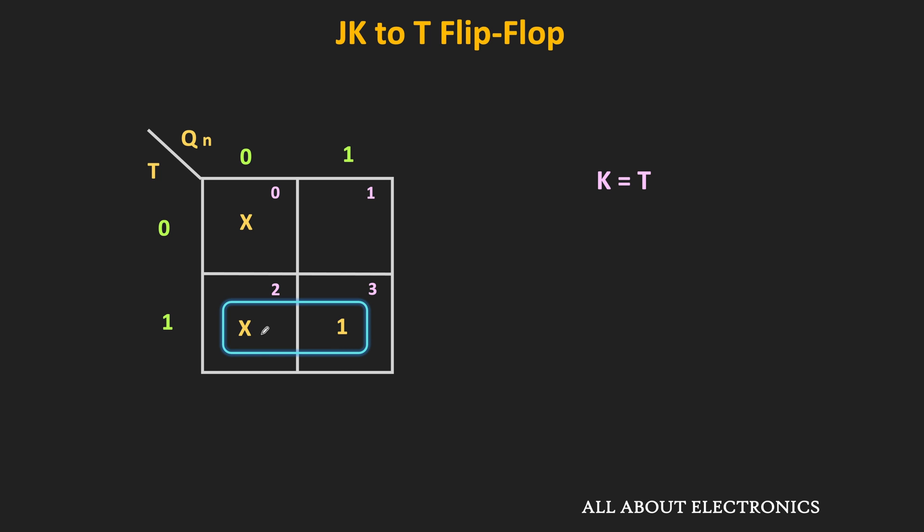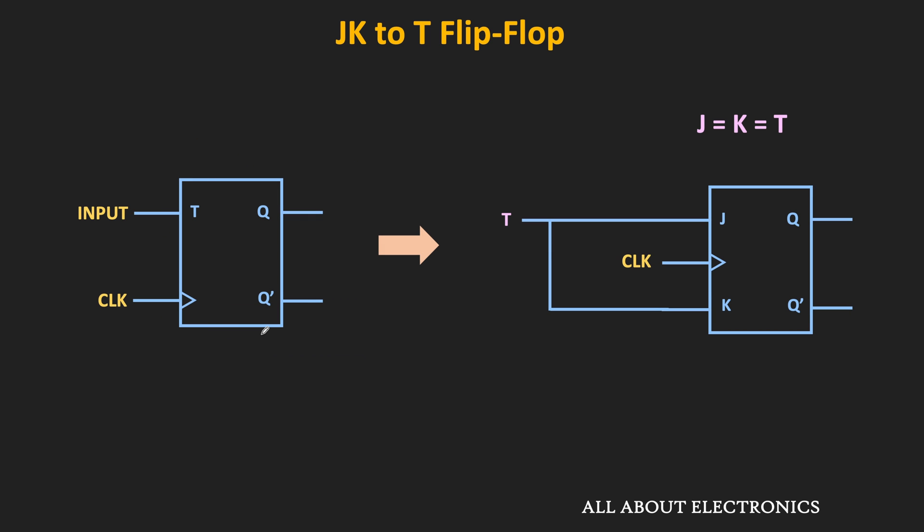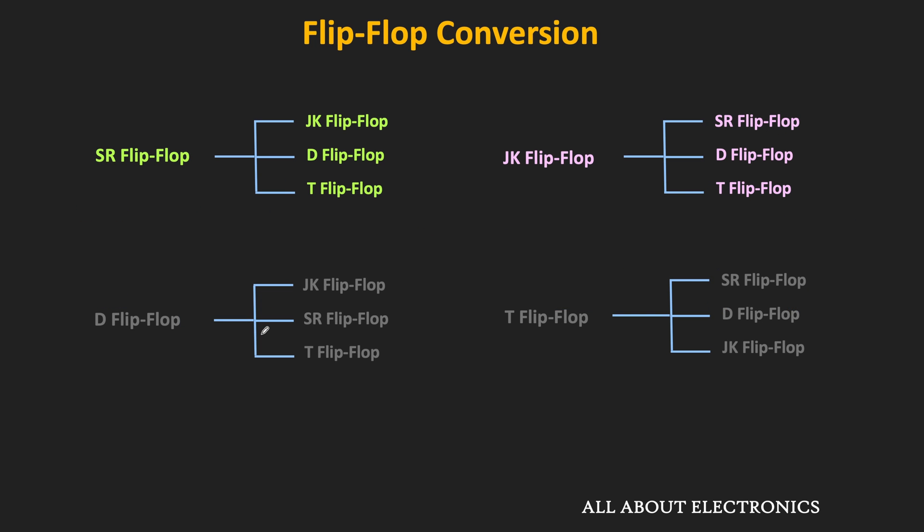During this JK-to-T flip-flop conversion, J = K = T. In other words, both J and K inputs should be connected to the T input. So in this video, we understood how to convert the JK flip-flop into the SR, D, as well as the T flip-flops.